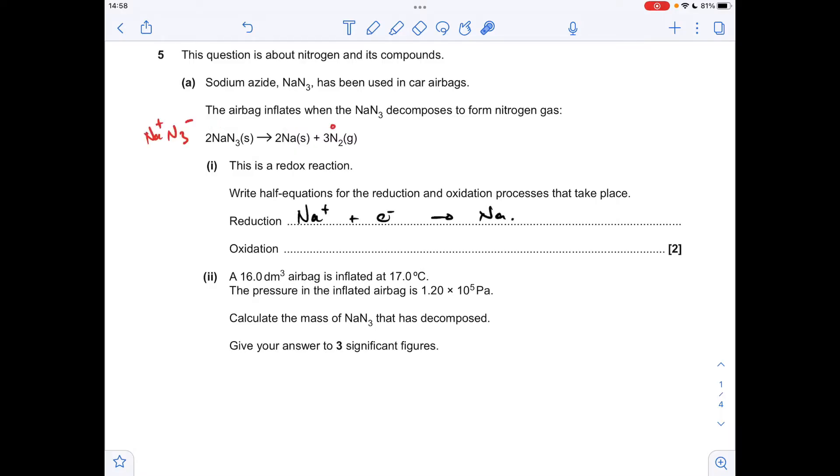For the oxidation reaction, the N3 species might have caused a bit of an issue. NaN3 has Na+, so N3 must be one minus going to N2. Balancing the atoms, we get 2N3- on the left and 3N2 on the right. To balance the charge with two minus on the left, it must be two electrons on the right.